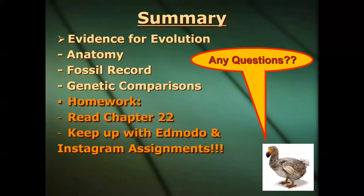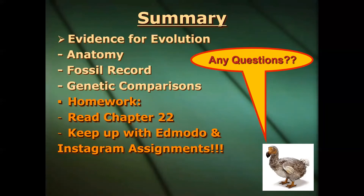That pretty much finishes our set of notes. We looked at very strong evidence for evolution and natural selection. We have the anatomical record with homologous structures — similar in structure, different in function — and analogous structures, which is the reverse: similar function but completely different structure. We have the fossil record, which is definitely strong evidence. And then the strongest evidence: genetic comparisons — comparing DNA sequences and protein sequences. Make sure you read the chapter. There's a quiz on Friday on Edmodo, 9 to 11 a.m., with another window from 1 to 3 p.m. Check in on Edmodo and Instagram daily.